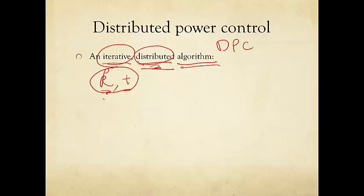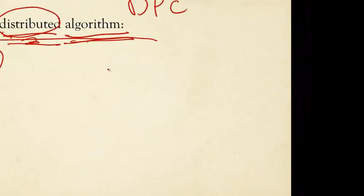Most likely it will be discrete for what we'll be looking at. We index this and hope that as time goes on — as this index k or t becomes very large — something good will happen. For example, the algorithm actually stops. It converges at a pretty good point, solving some optimization or gain problem. That's enough background on this iterative distributed algorithm.